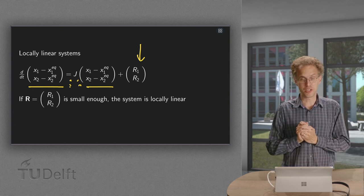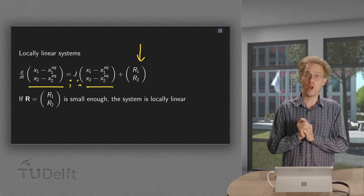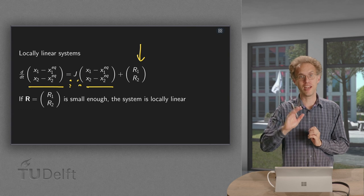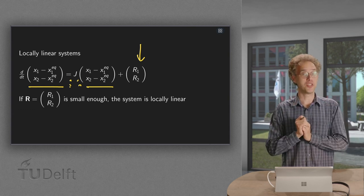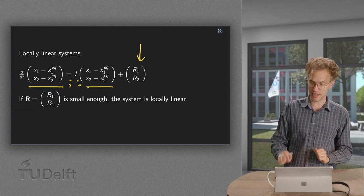And if this remainder is small enough, then the system is called locally linear. Small enough means that we will see that later, but that's almost always fine. So almost always we have a locally linear system.